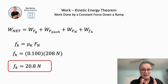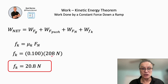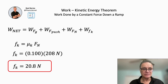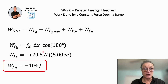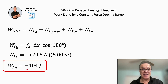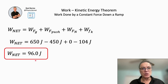The friction force is the coefficient of kinetic friction multiplied by the normal force: 0.1 × 208 N = 20.8 newtons. With that constant value, we calculate the work done by friction: 20.8 N × 5 m × cos(180°) — these two vectors are anti-parallel — giving negative 104 joules. Adding all four contributions: W_gravity + W_push + W_normal + W_friction = 650 − 450 + 0 − 104 = 96 joules net work total.